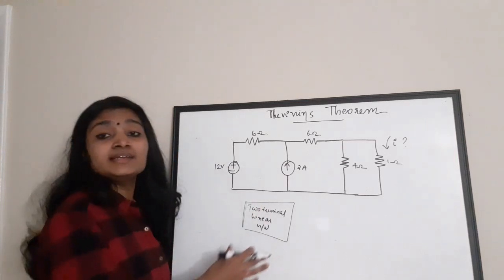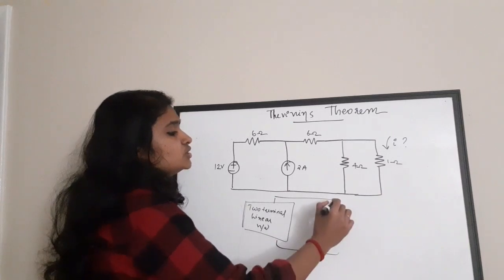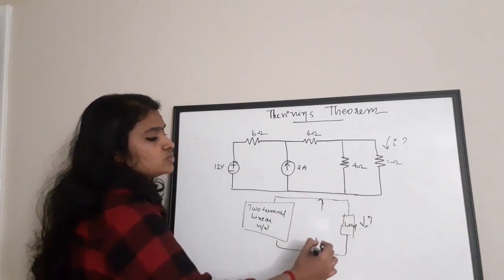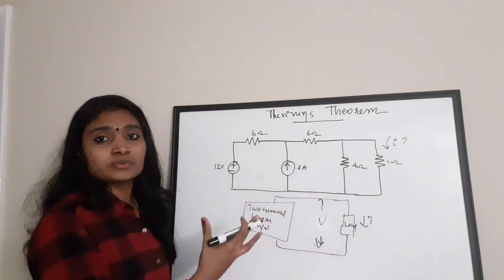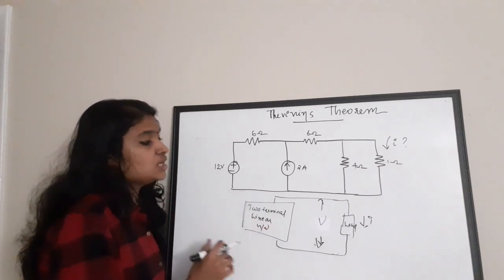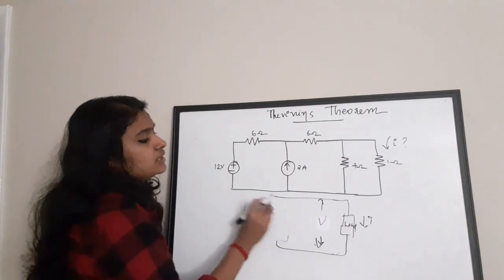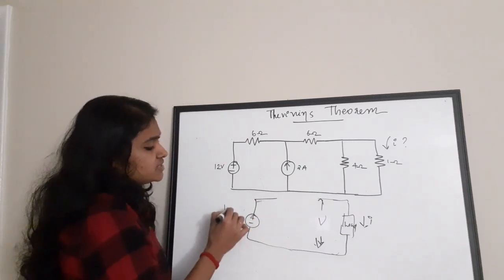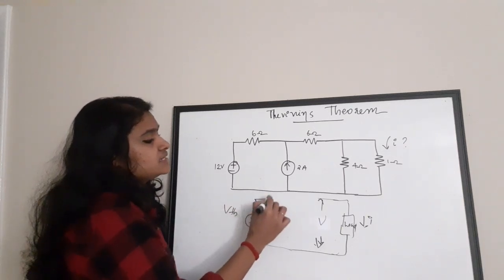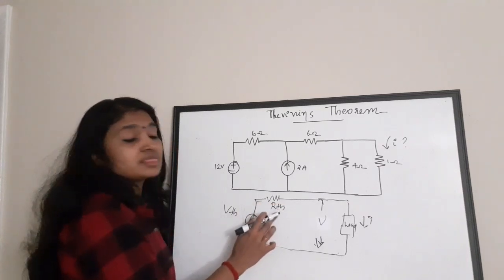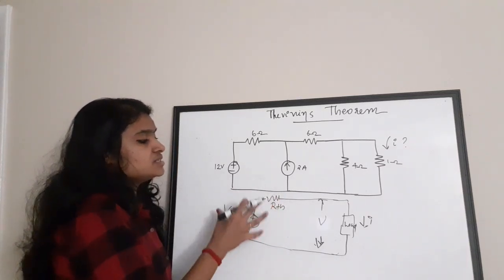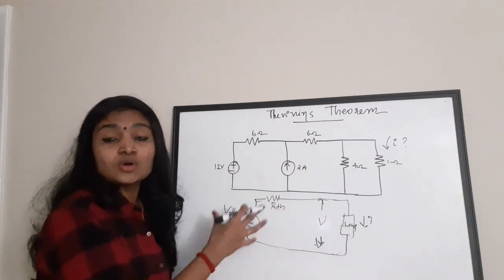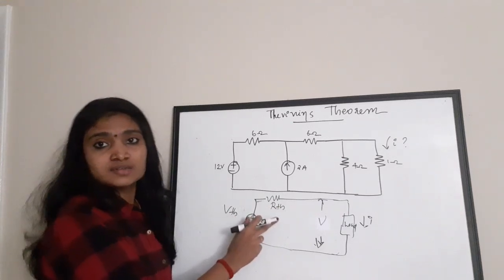Consider a two-terminal linear network connected to a load. This load has some current flowing through it and some voltage across it. We can replace this two-terminal network with a voltage source named VTH (Thevenin's voltage) in series with a resistor RTH (Thevenin's resistance). This is what Thevenin's theorem accomplishes.